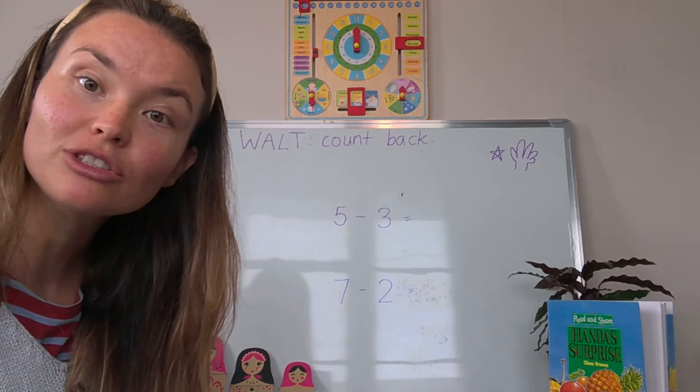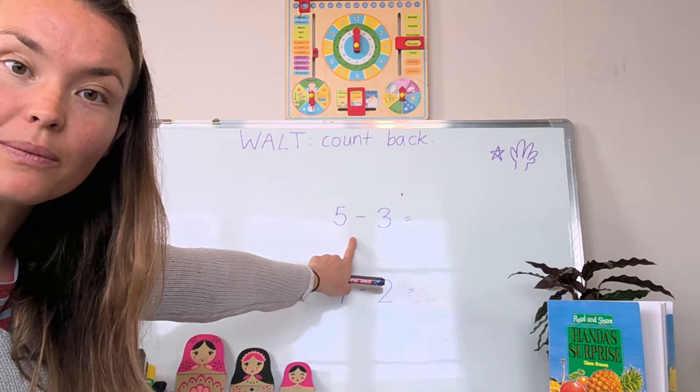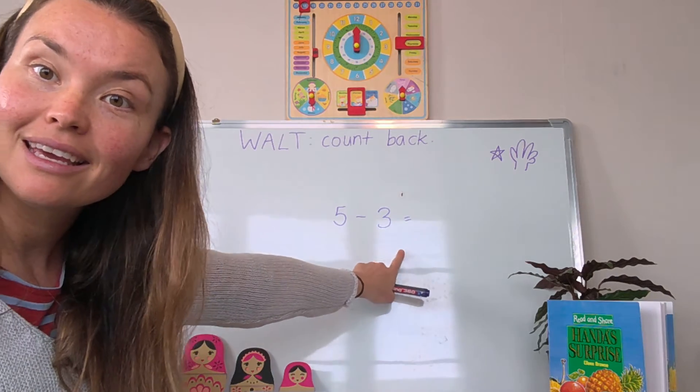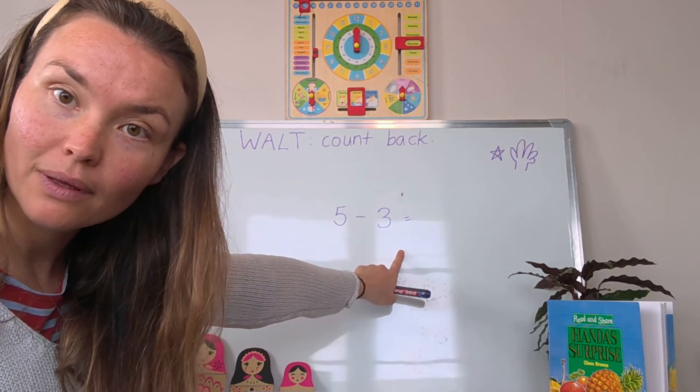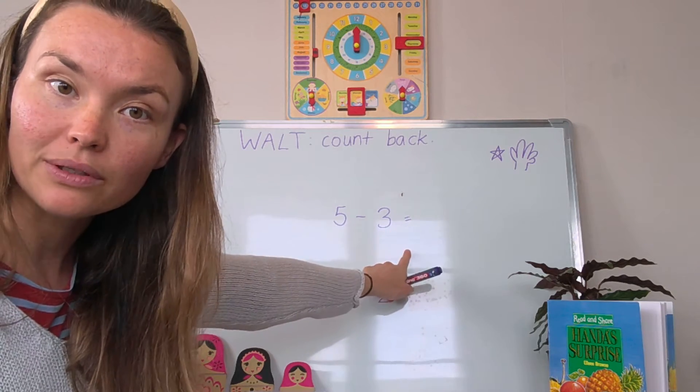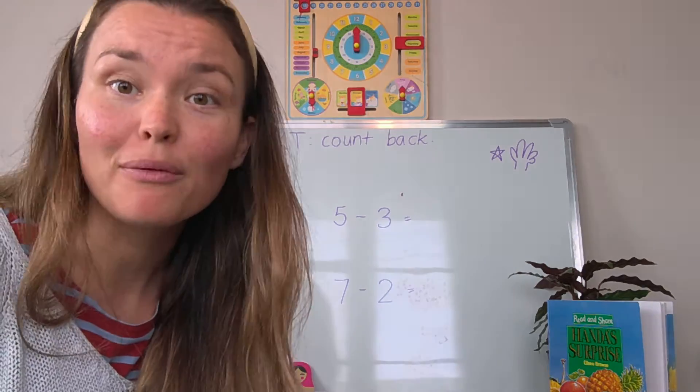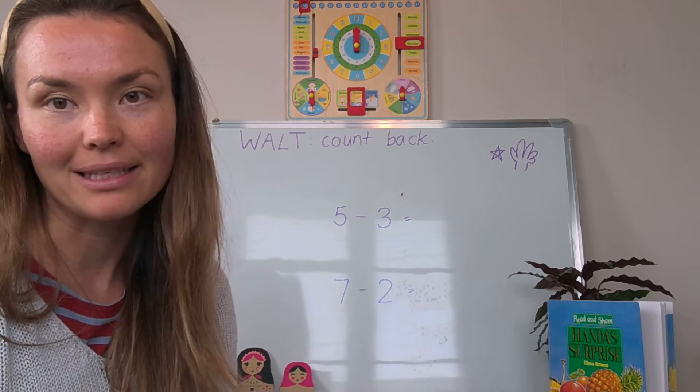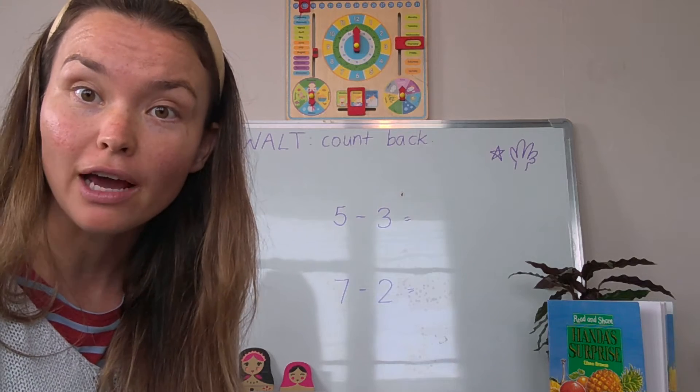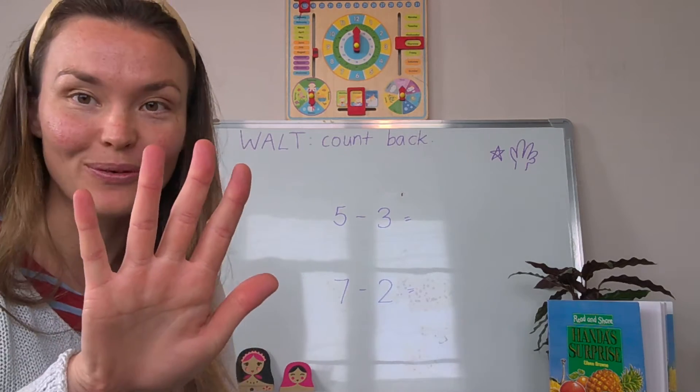Now our question is five take away three equals. Five take away three equals. So we need to make the big number using our hands. So let's make five on our hands. Can you do this too? Great.